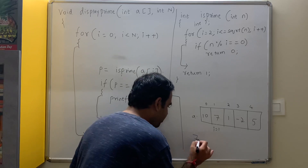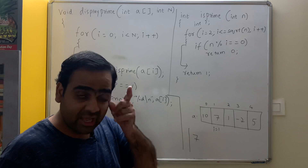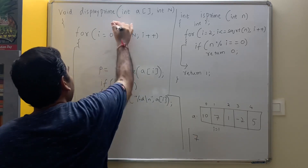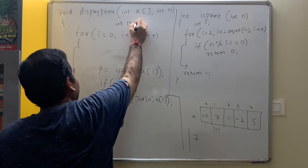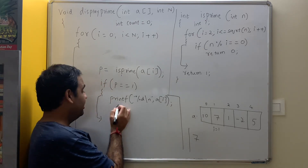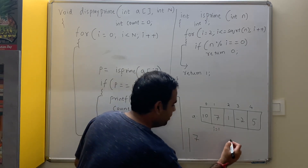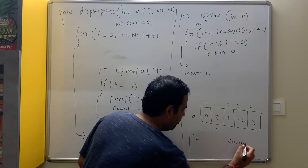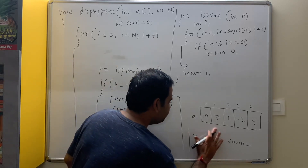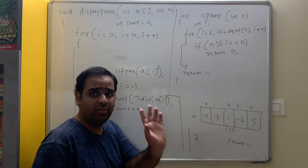7 is displayed on the output screen. We have encountered 1 prime so far. Therefore we increment count — the initial value of count is 0, and now it becomes 1. Then i++ makes i equal to 2. a[2] is 1.